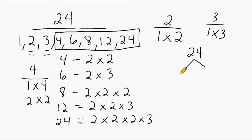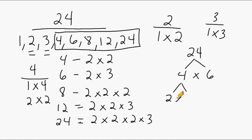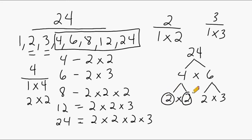We can start off by writing 2 times 12, or 3 times 8, or 4 times 6. I'm going to start with 4 times 6. And if the resulting factors are composite numbers, we can break those down further into prime numbers. 4 can be produced by multiplying 2 times 2, and 6 can be produced by multiplying 2 times 3. So we have broken 24 down into all prime numbers. If we multiply 2 times 2 times 2 times 3, that gives us a product of 24, showing that any composite number can be produced by multiplying a combination of prime numbers.